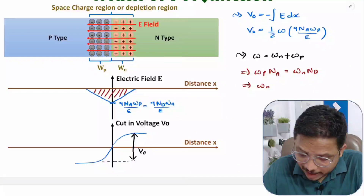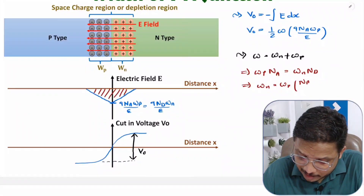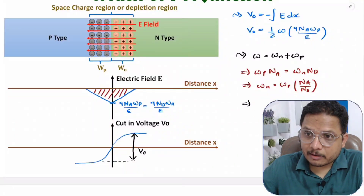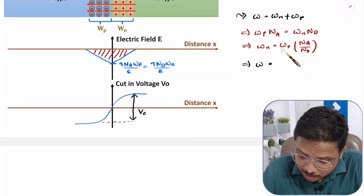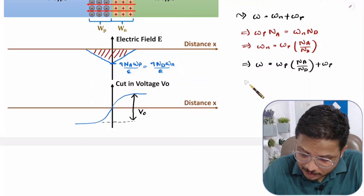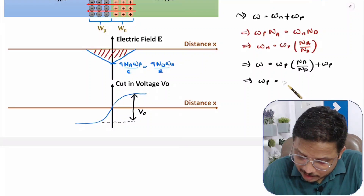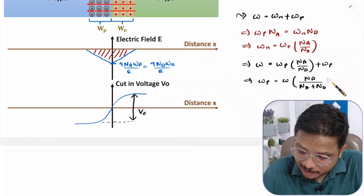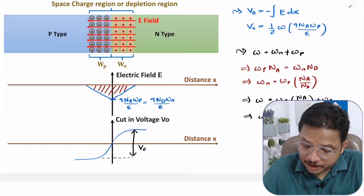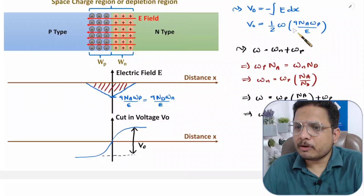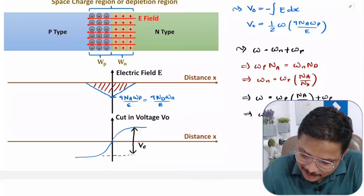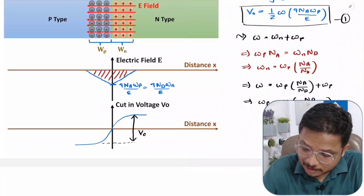From charge neutrality, Wn = Wp·Na / Nd. Substituting this into W = Wp + Wn gives W = Wp + Wp·Na/Nd. Solving for Wp: Wp = W·Nd / (Na + Nd). So now we have Wp expressed in terms of W, and we can substitute this (equation 2) into the V0 equation (equation 1).